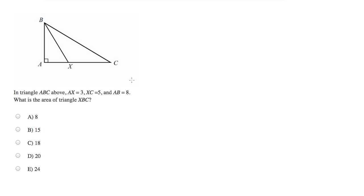This is a very clever SAT problem. This is the real Tom Rose, and to start out, let's plug in the values that we know. In the triangle above, AX equals 3, XC equals 5, and AB equals 8.